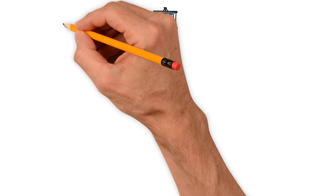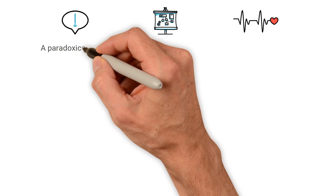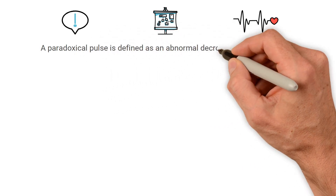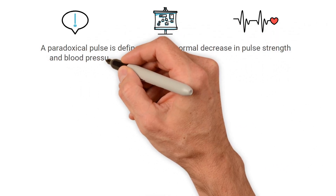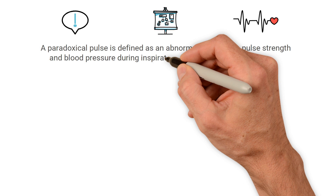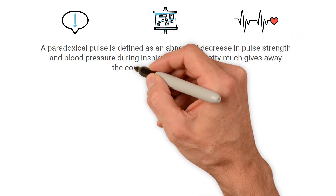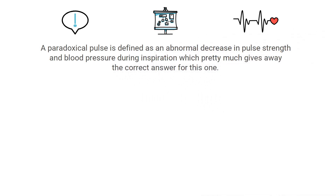To get this one right, you needed to be familiar with the different abnormal pulse types. A paradoxical pulse is defined as an abnormal decrease in pulse strength and blood pressure during inspiration, which pretty much gives away the correct answer for this one.